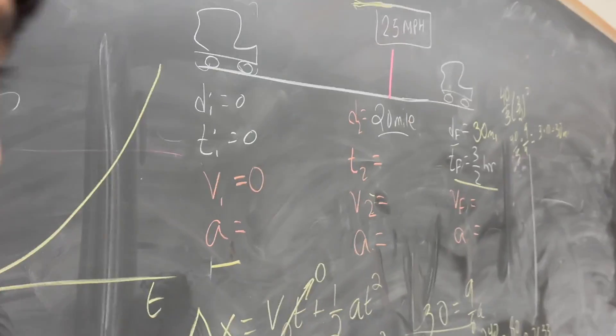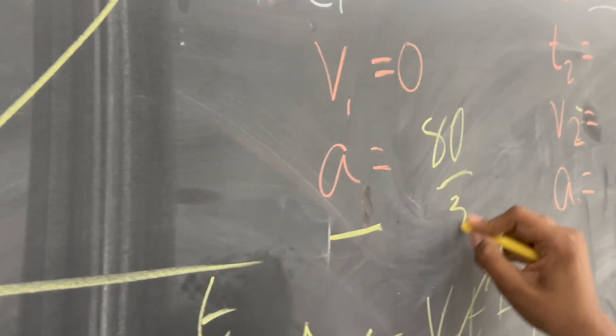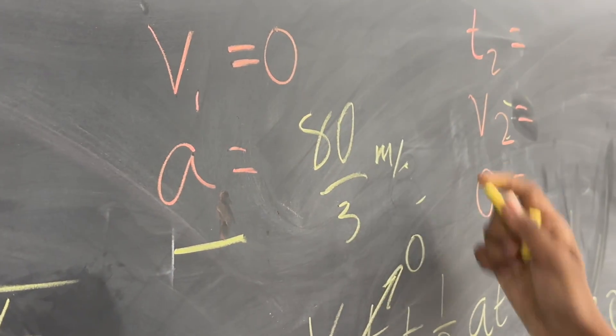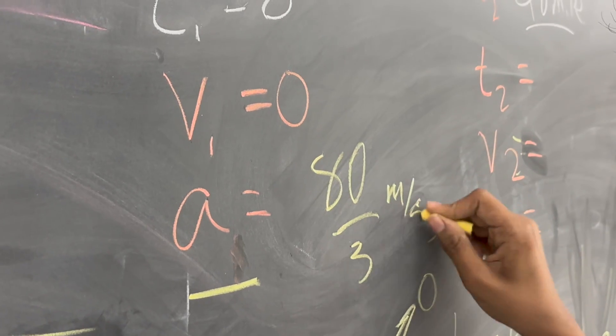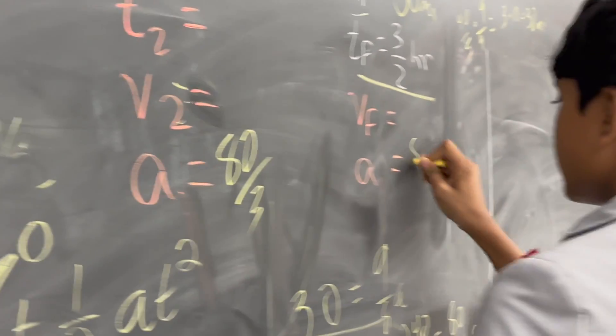And... You want to write acceleration at all the same equations? Well, okay. Acceleration is 80 over 3. We're not going to write meters per second. Okay. 80 over 3 and 80 over 3.